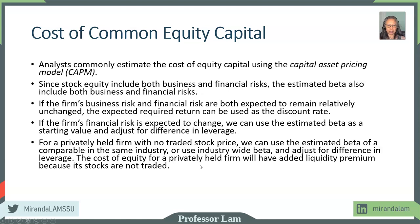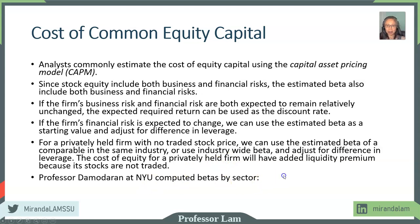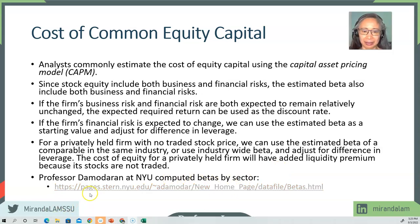Another situation requiring adjustment is for companies that are not publicly traded. When we estimate beta, we need the return on the stock and the return on the market. If a company is not publicly traded, it doesn't have a readily available stock price. Even in those cases, we can still compute the cost of equity using the estimated beta of a comparable firm in the same industry or an industry-wide beta, then adjusting for different leverage. Prof. Damodaran at New York University has computed beta by sectors. Let's take a look.